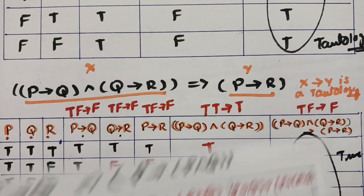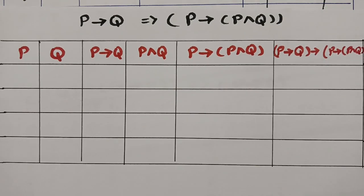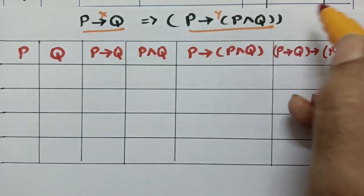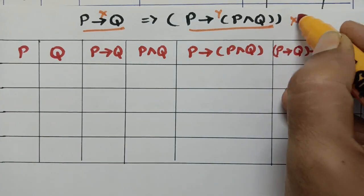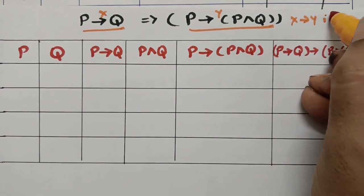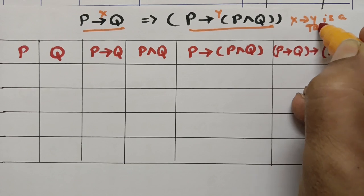The next question is: (p→q) double implies (p→(p∧q)). We take p→q as x and p→(p∧q) as y, and we have to show that x implies y is a tautology.